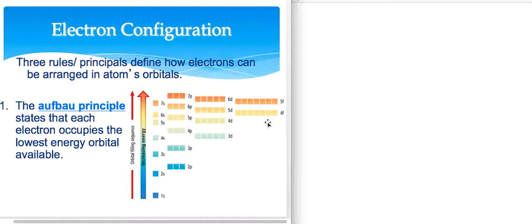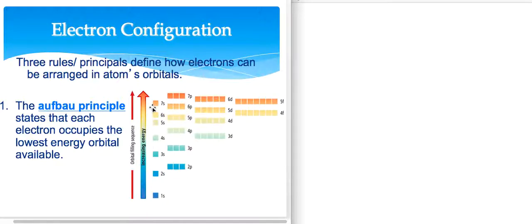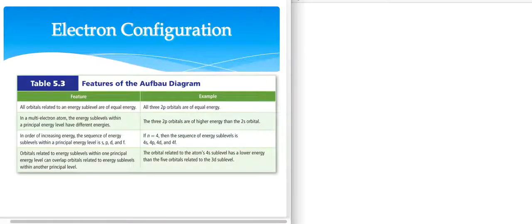Going all the way out to the F sub-level, these orbitals have seven orbitals each and are even larger than the D orbitals — they are two energy levels lower. So I have 6S first, closest to the nucleus, then 4F, then 5D, then 6P. Please keep in mind the staggering that's going on there.